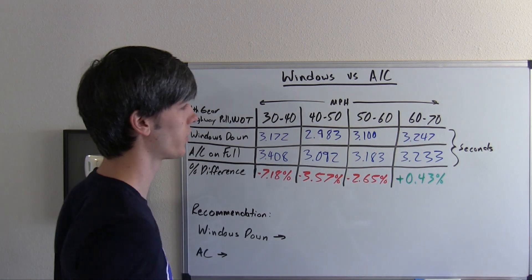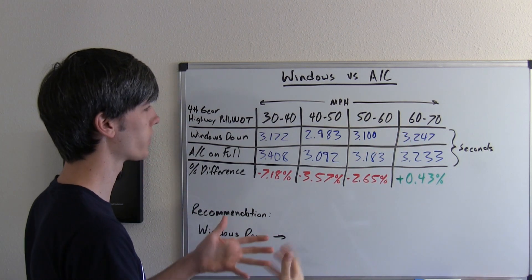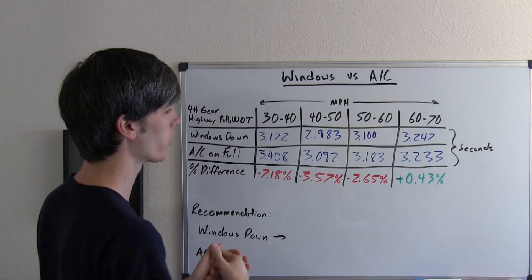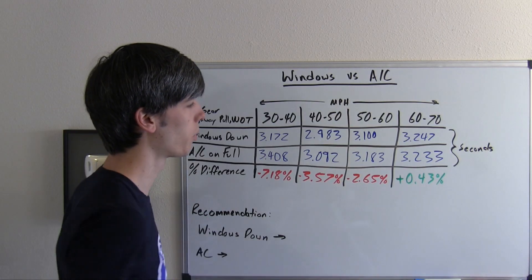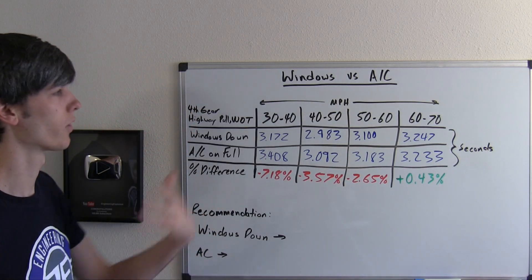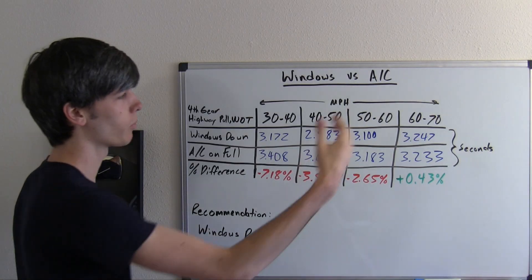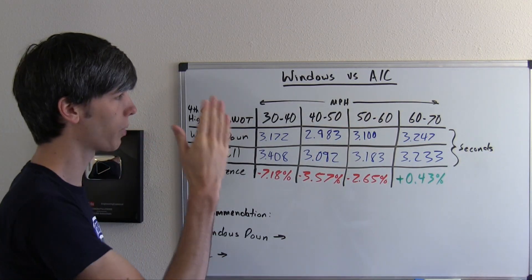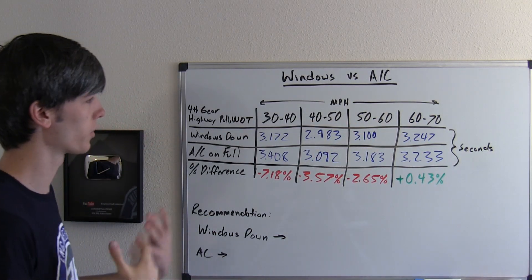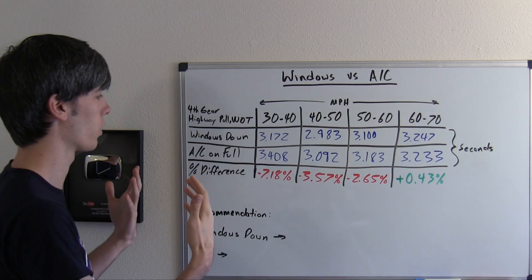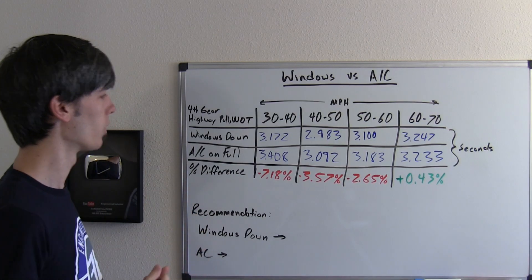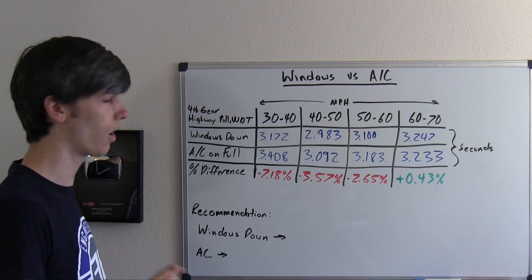Finally from 60 to 70, where drag is kind of taking over and using quite a bit of power with the windows down, the AC was 0.43% faster from 60 to 70 miles per hour. So somewhere in the 60 to 70 range, you probably have that crossover where it's more efficient to have your AC on and your windows up rather than your windows down with your AC off.